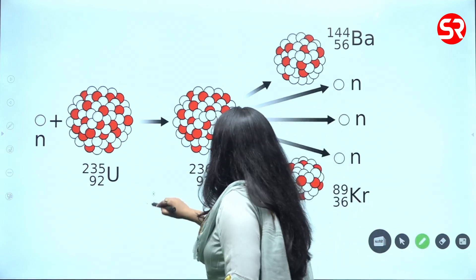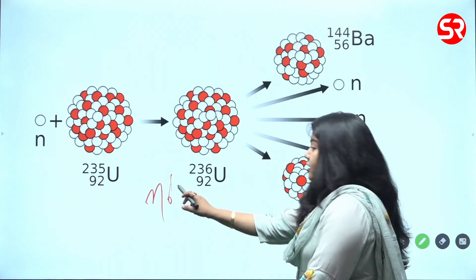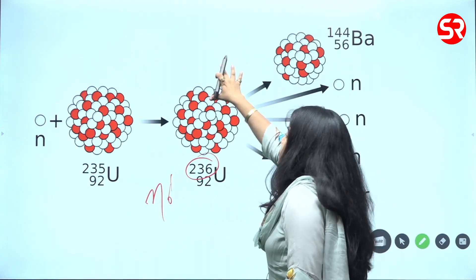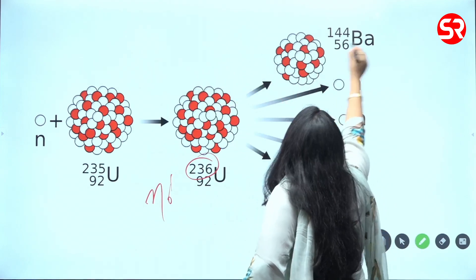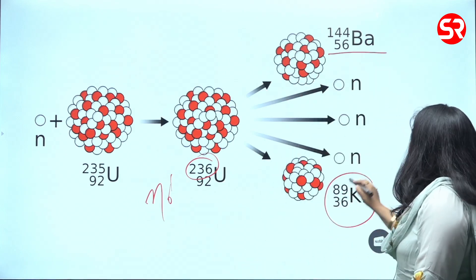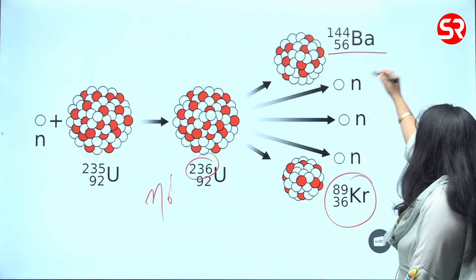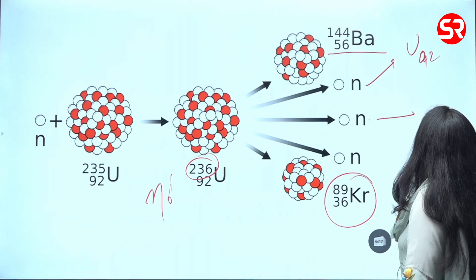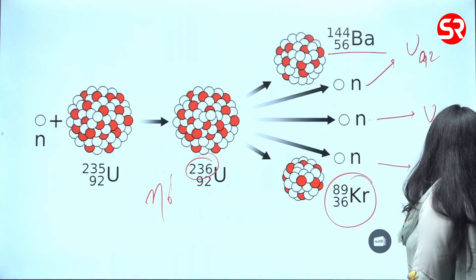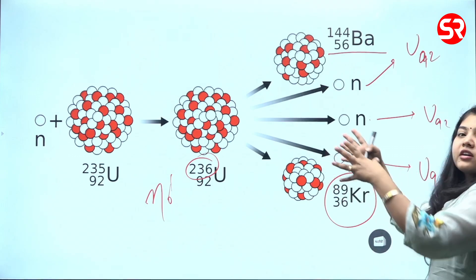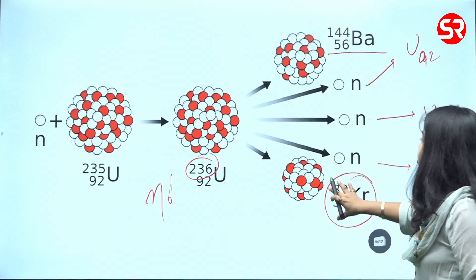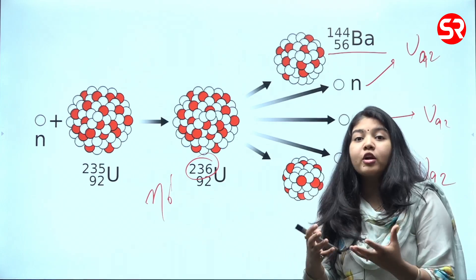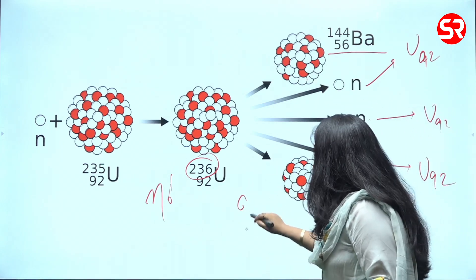One neutron is added to uranium-235, making it U-236 first, and then it breaks. It breaks into barium and krypton plus 3 neutrons. These 3 neutrons then further bombard uranium and the same reaction takes place — barium is formed, krypton is formed, and 3 extra neutrons are formed. The most important product of this entire process is a huge amount of energy.